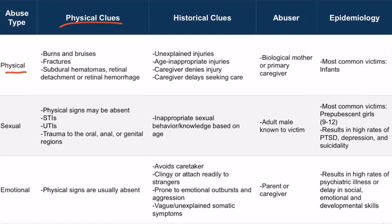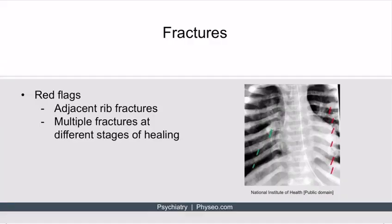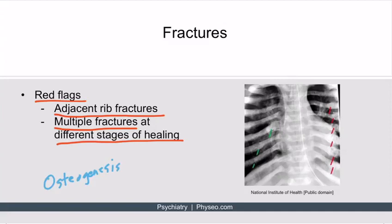Another physical clue for physical abuse is fractures. Not all fractures indicate child abuse, but there are certain red flags. For example, adjacent rib fractures in infants are suggestive of abuse, as though the child's rib cage was being compressed by an adult's hands. The second red flag is multiple fractures at different stages of healing. There is a condition called osteogenesis imperfecta where children break bones easily and frequently. To differentiate, obtain a thorough history and physical exam and clarify exactly what caused the fracture.